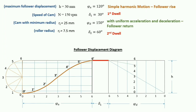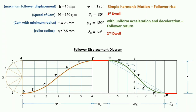From the top-left corner we join to points 6, 5, 4, 3, and from the bottom-right corner we join to points 0, 1, 2, 3. We mark the intersection points from 6' to 0' and join them with a smooth curve. This gives the displacement curve for follower return. Finally, delta 2 = 60 degrees completes the displacement diagram, which will be used to construct the cam profile.